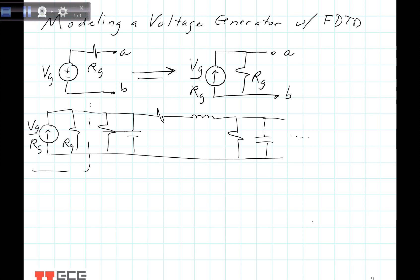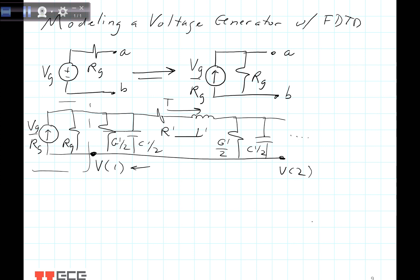Right there is where the generator is. Moving along, we have G prime over 2, C prime over 2, then R prime, L prime, then G prime over 2 and C prime over 2. We model the voltages at two locations: V at 1 and V at 2, because we need to determine the first voltage when we set up our FDTD equations. The current is at location 1, even though voltages and currents are slightly offset.